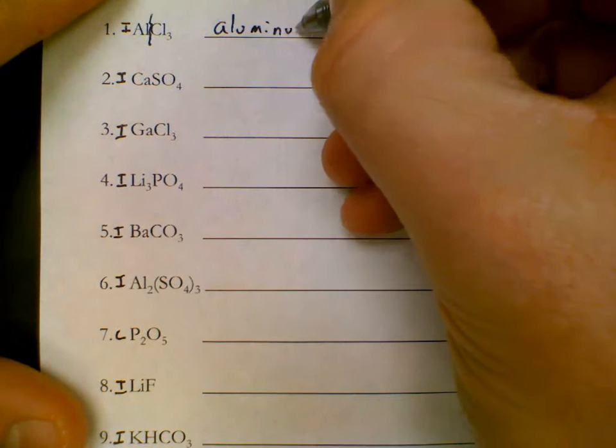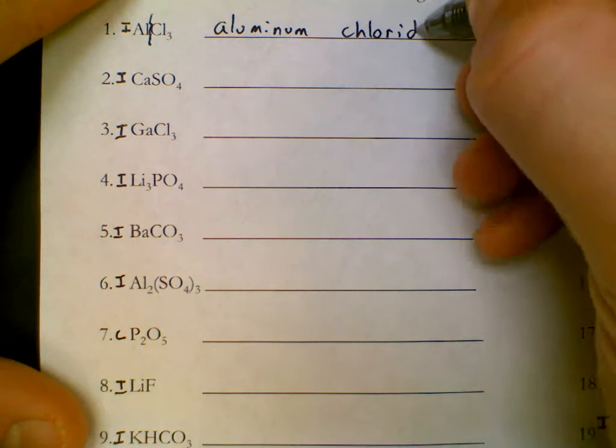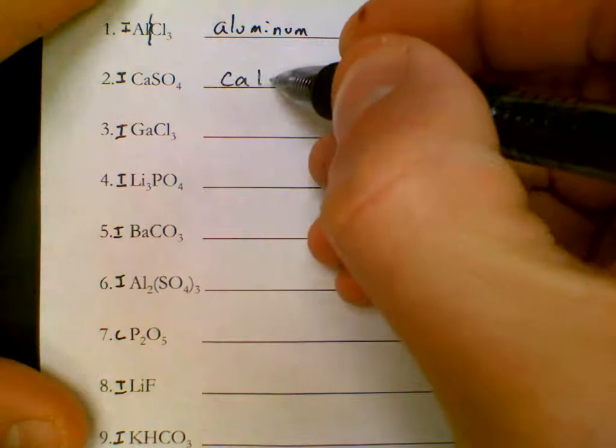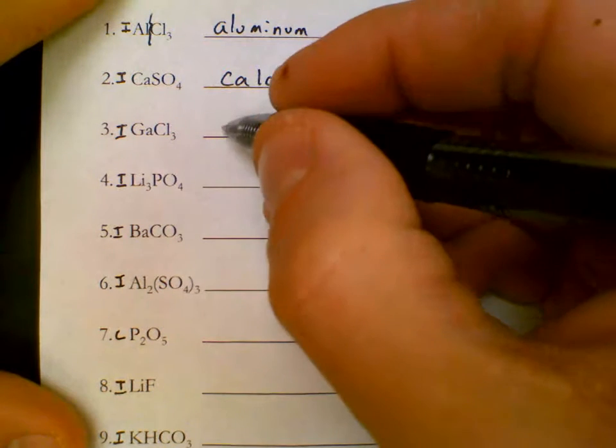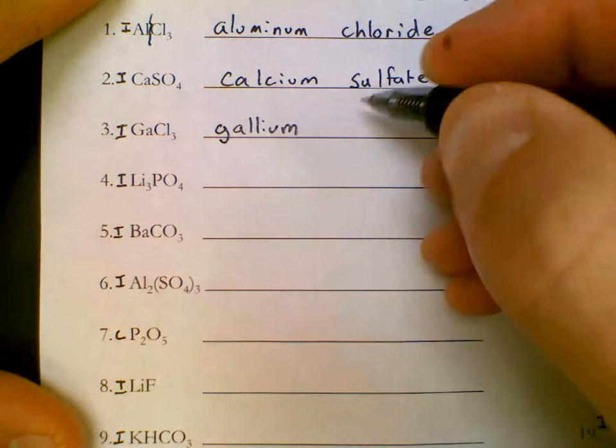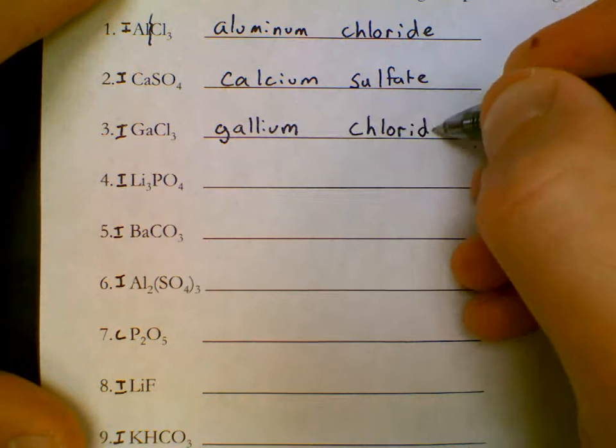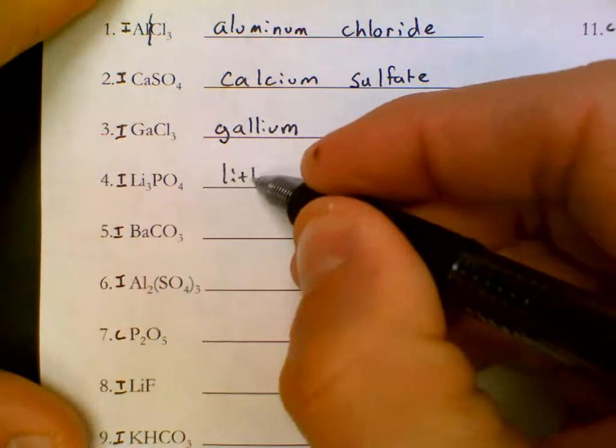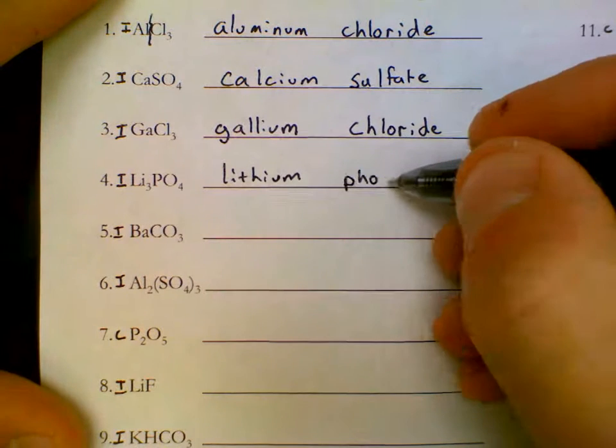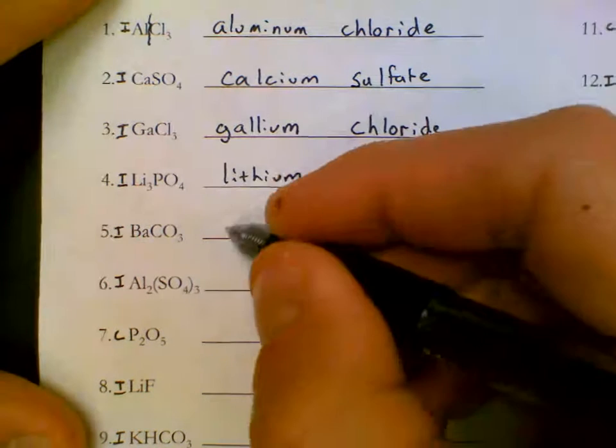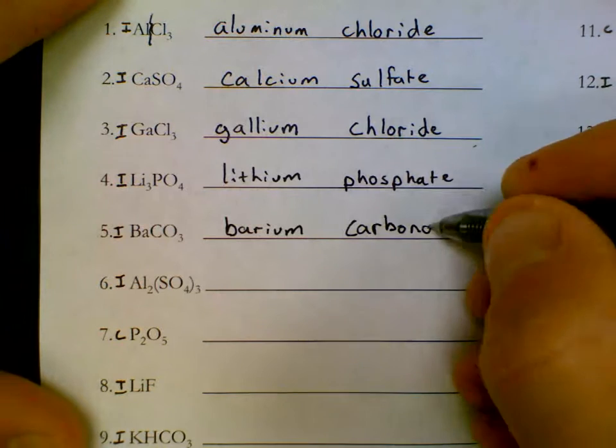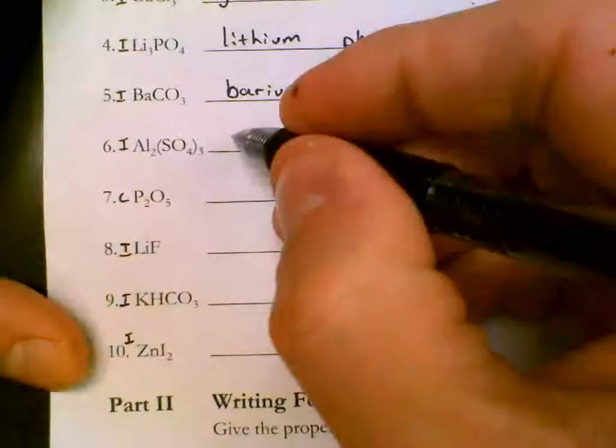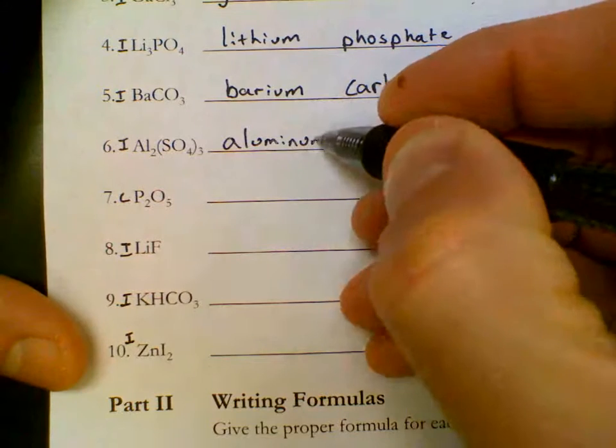On the left hand side is going to be your cation, on the right hand side is your anion. So AL is aluminum, CL is chloride. CA is calcium, SO4 is sulfate. GA, gallium, that's one that we don't use often. CL is chloride.